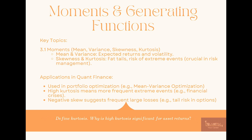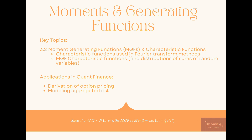Moment generating functions go hand in hand with these distributions. It's not just important to know mean and variance, but also the third and fourth moments — skewness and kurtosis — which are very important for studying the risk of extreme events. Fat tails and tail risk in portfolios and options, as well as option pricing and modeling aggregated risk, require characteristic functions and moment generating functions.